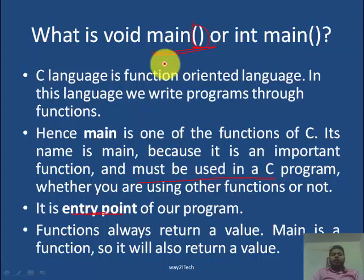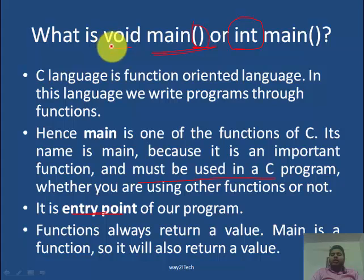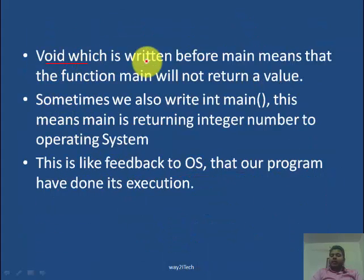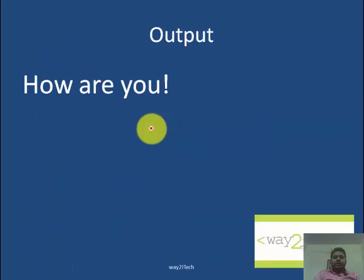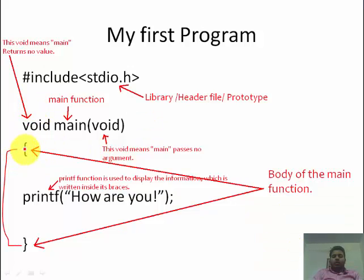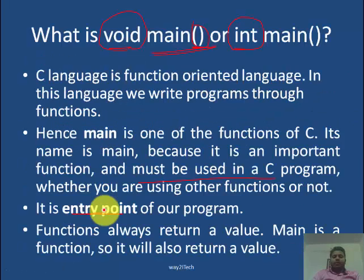Every function will return a value. Writing void before the function means you don't want the function to return a value. Writing int means that function will return an integer value. Void is written before main because the main function will not return a value. If we write int main, it means main is returning an integer to the operating system — this is like feedback that our program has completed its execution. The curly brackets are known as a block — every function will have its block, and all tasks inside this block will be done by the function.